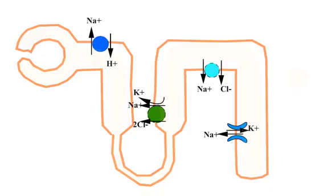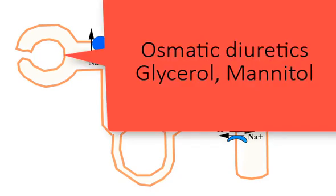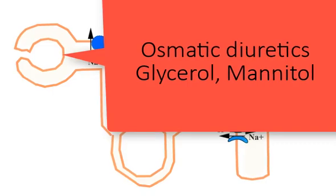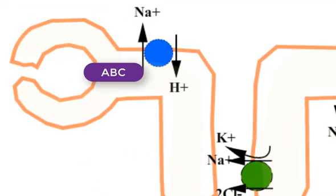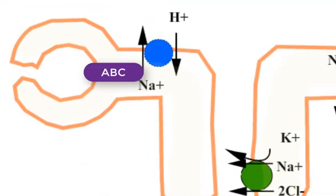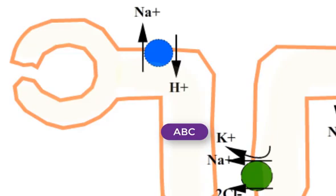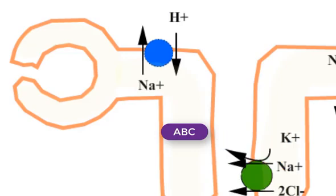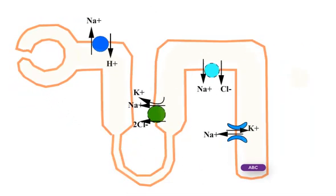The diuretics act at different sites of the nephron. Osmotic diuretics include glycerol and mannitol. After intravenous administration, it is filtered at the glomerulus but is not reabsorbed from the renal tubules. It osmotically attracts and retains water as it moves through the nephron and into the urine.